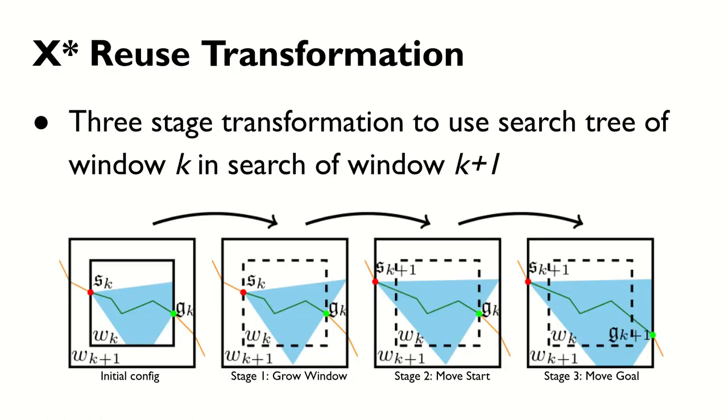At a high level, X*'s novel transformation performs a three-stage manipulation to the prior A*-like search tree, transforming it from a tree from start k to goal k into a tree from start k+1 to goal k+1, thus avoiding the re-expansion of many of the states in the initial tree.